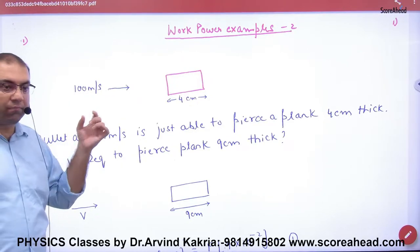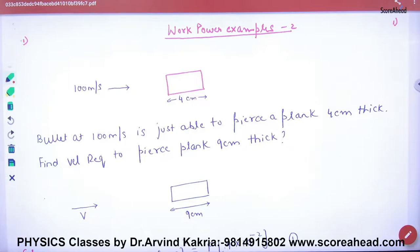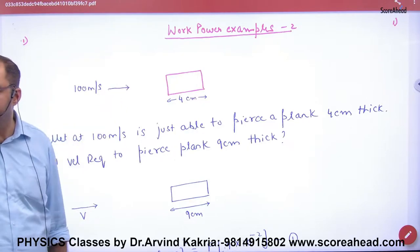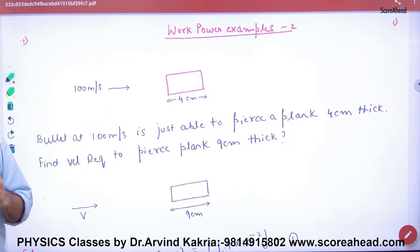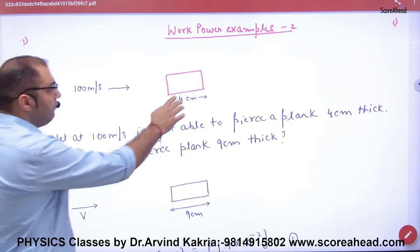One bullet at 100 meters per second enters this plank. The bullet is going and it is a plank, so the plank will enter and the plank will stop it. So what will be the final velocity here?